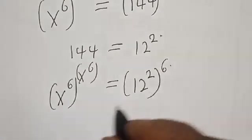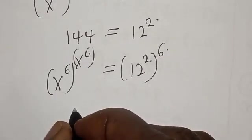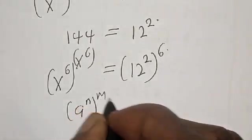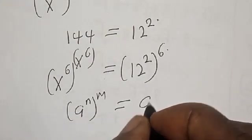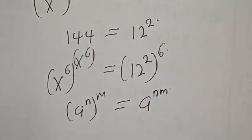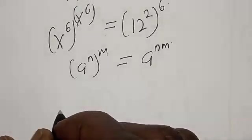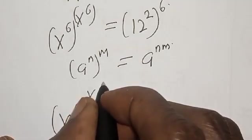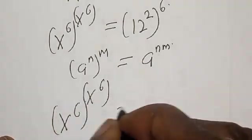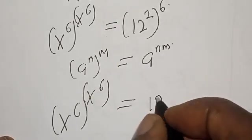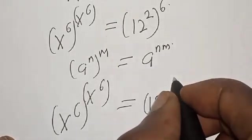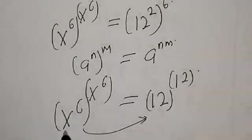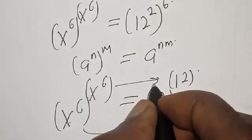For the right-hand side, remember that a raised to power n raised to power m is the same thing as a raised to power n times m. Now s raised to power s raised to power s raised to power s raised to power s raised to power six is equal to 12 raised to power 12. By comparing, this side is equal to this, and this one is equal to this.